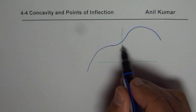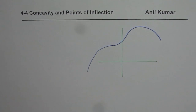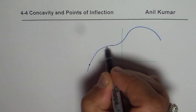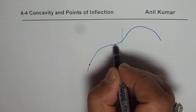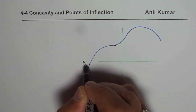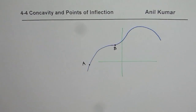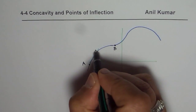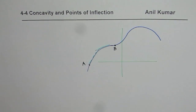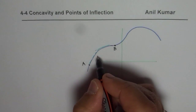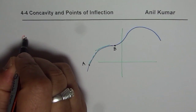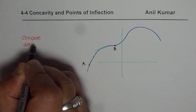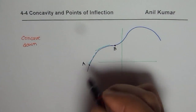Now in this portion, what do you notice? Consider from point A to point B. If I draw a tangent line, the graph is under the tangent line. That means this portion is concave down — the tangent is above the graph.